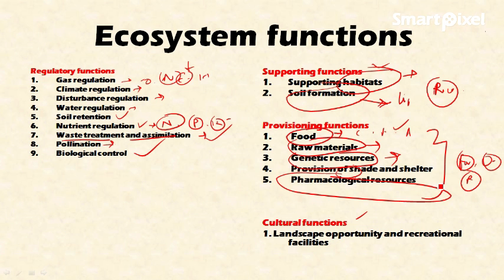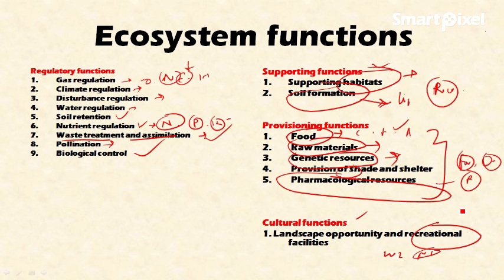The next important function is cultural functions. The ecosystem provides recreation facilities — for example, we set up wildlife sanctuaries, national parks, and biosphere reserves for recreation as well as scientific research for the community. It also provides landscape opportunities. These are all the broad functions performed by the ecosystem.